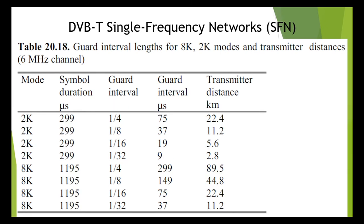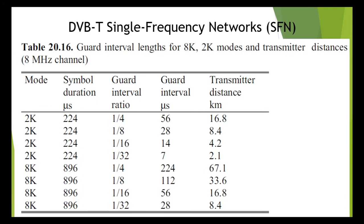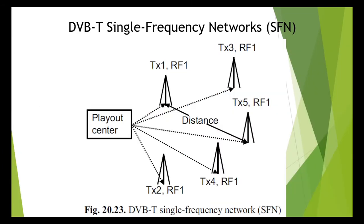In a single frequency network, all the individual transmitters must be synchronized with one another. The program contribution is injected from the play-out center in which the MPEG-2 multiplexer is located — for example, via satellite, optical fiber, or microwave link.